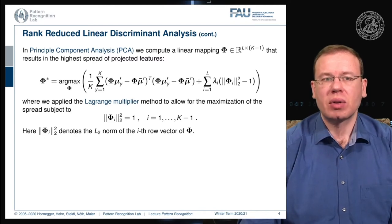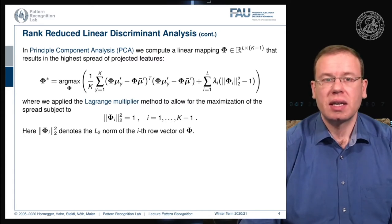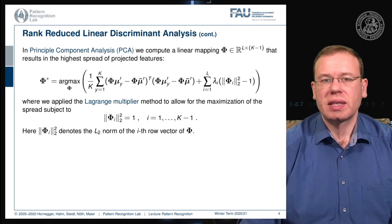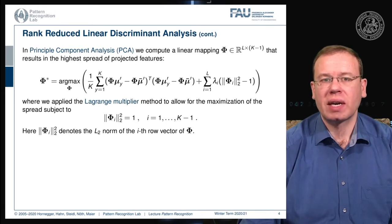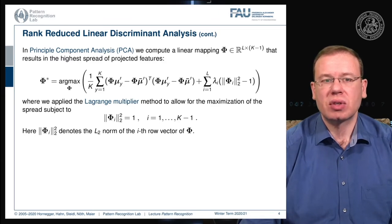We write out the two-norm as an inner product of two vectors, compute the mean of classes k, and apply regularization. On the right-hand side there is a sum over regularization terms: lambda_i times the two-norm of phi_i, where phi_i is the i-th row vector of phi. This means we are looking for a matrix where the individual row vectors have a norm of 1. The method used to enforce these constraints is the Lagrange multipliers.